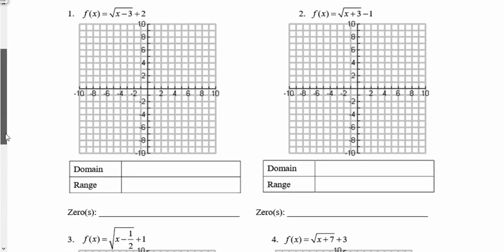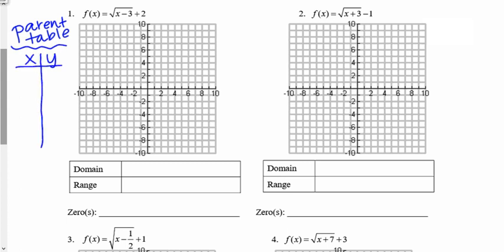Let's look at Target 1. We'll also find the domain, range, and zeros of these graphs. I'm going to copy down that parent table. It was an x-y chart, and the x values were all positive numbers — perfect squares I could easily take the square root of: 0, 1, 4, and 9. The y values were then the square roots of those numbers: 0, 1, 2, and 3.